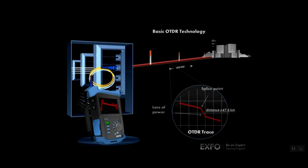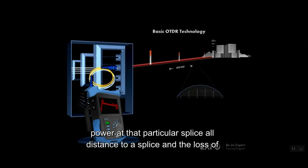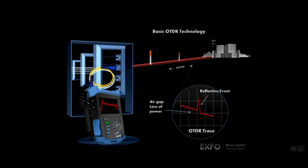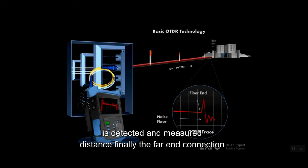The OTDR will accurately measure the distance to a splice and the loss of power at that particular splice. All reflective events are detected and measured for reflectance, power, and distance. Finally, the far end connection is detected and measured.